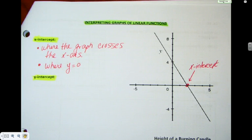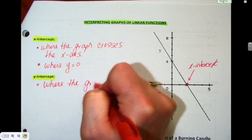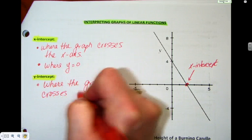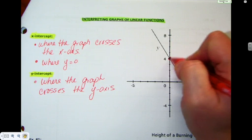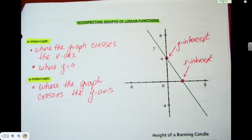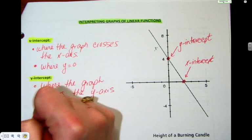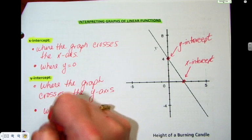What do you think the definition of the y-intercept is? Yep, where the graph crosses the y-axis. There is the y-intercept. It's a special point because what do we know about the x-coordinate of the y-intercept? This is where x equals zero.